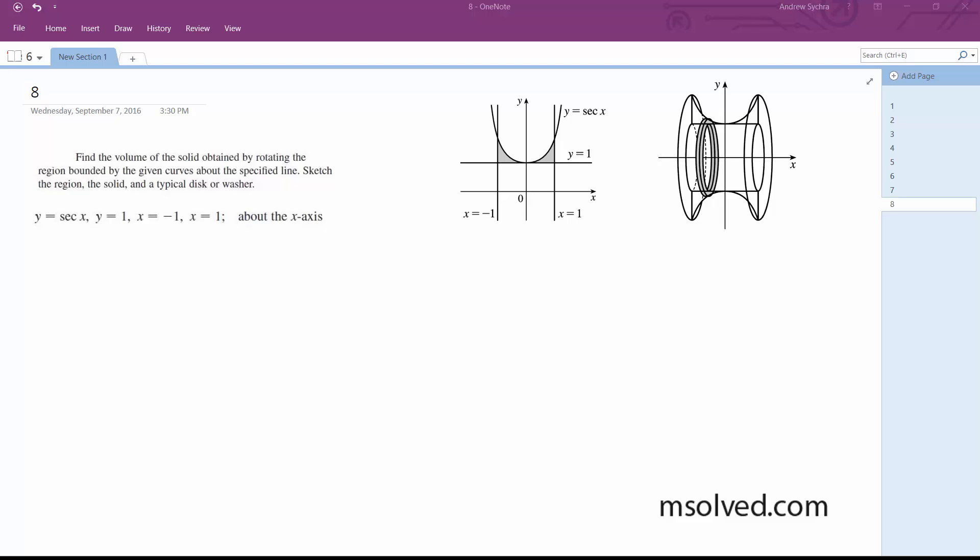Alright, so we want to find the area enclosed here from x equals negative 1 to 1 and by y equals 1. So you've got to be a little careful here. We're above the x-axis.